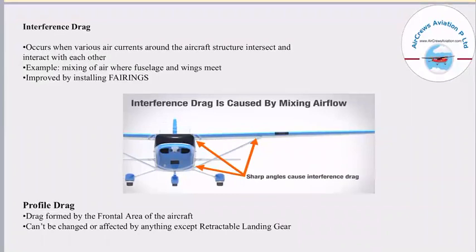Interference drag occurs when various air currents around the aircraft structure intersect and interact with each other — for example, where the fuselage and wings meet. The airflow makes sharp angles which creates the interference drag, and this can be improved by installing fairings. Profile drag is generally formed by the frontal area of the aircraft and cannot be changed except by using retractable landing gear.